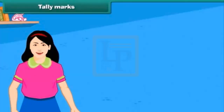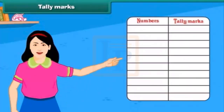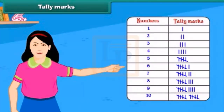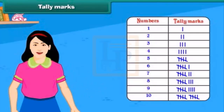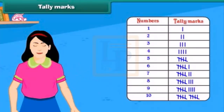Tally marks are one of the easiest and quickest methods used for data handling. A tally mark is counting the objects or activity in groups of 5. A single vertical line represents a single object.